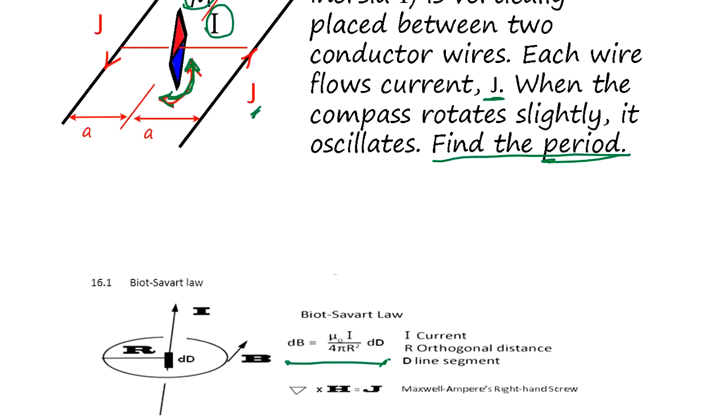The magnetic field generated by the current—current I, in this case J—where an element of a segment of current flow generates the magnetic field depending on distance. We take the element dL.